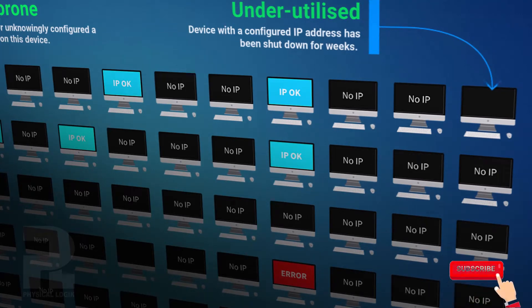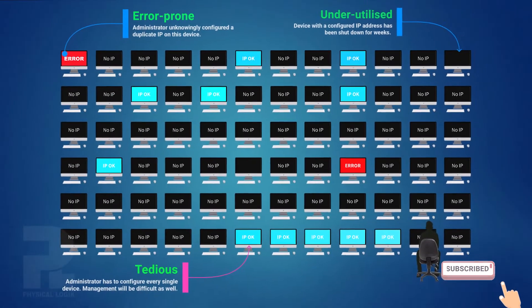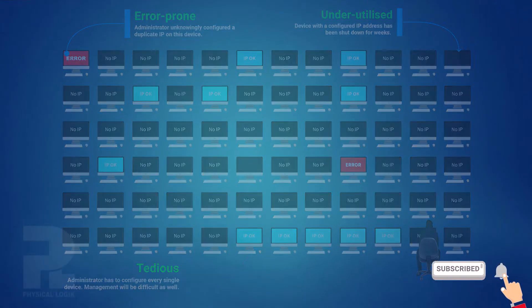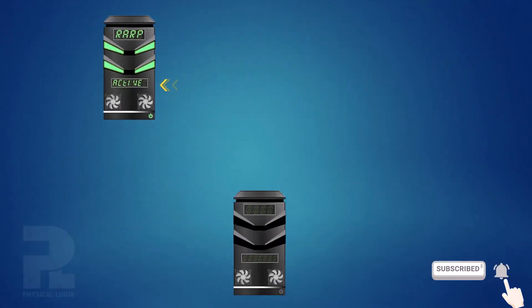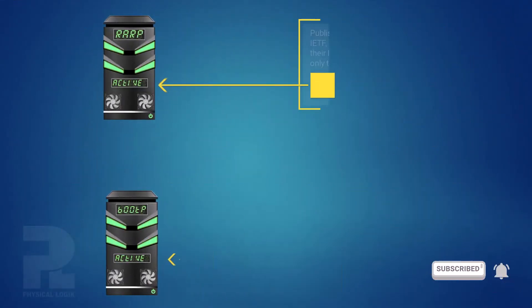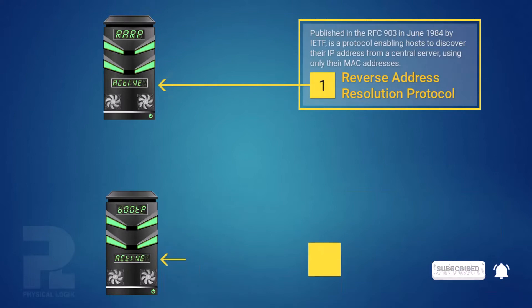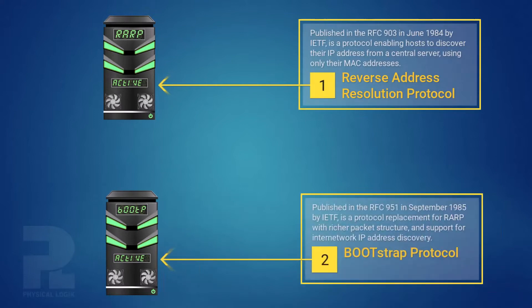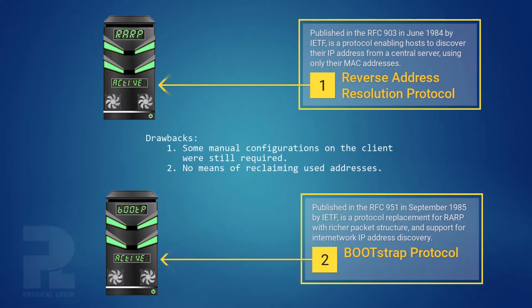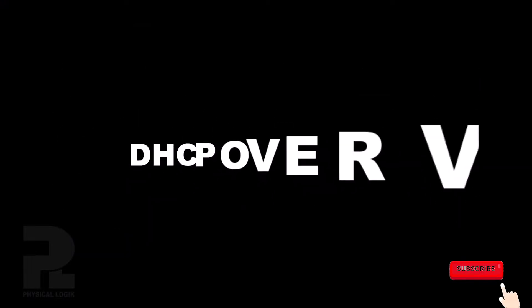This process had been successfully automated using protocols like RARP and BootP in past times. However, due to certain drawbacks, a much better solution was developed and it is now the most widely adopted method of configuring devices. Today we'll look at a DHCP overview.